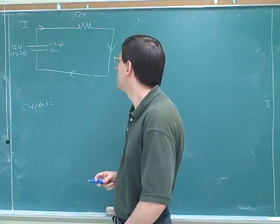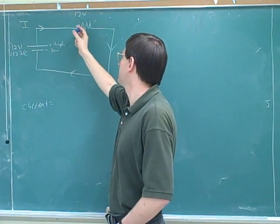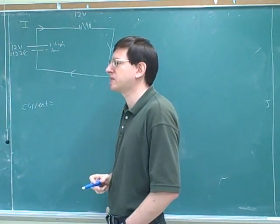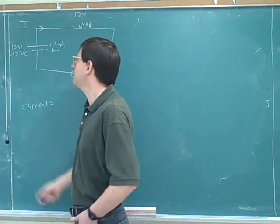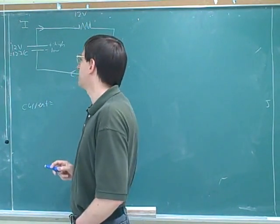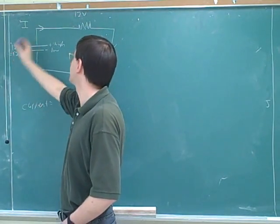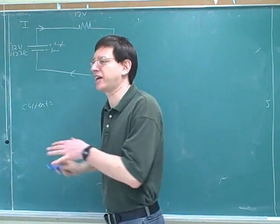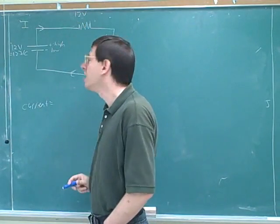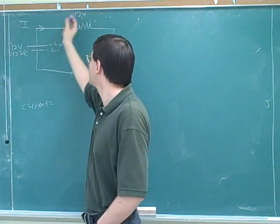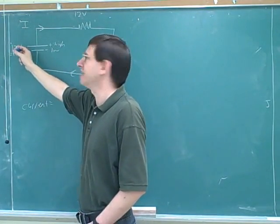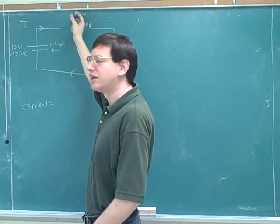We would consider the battery a voltage source and the resistor a voltage drop. In some problems you might call this positive 12 and this negative 12. But we should know that the battery represents a voltage source and the resistor is a voltage drop — or in our analogy, this represents a gain in height and this represents a loss in height.